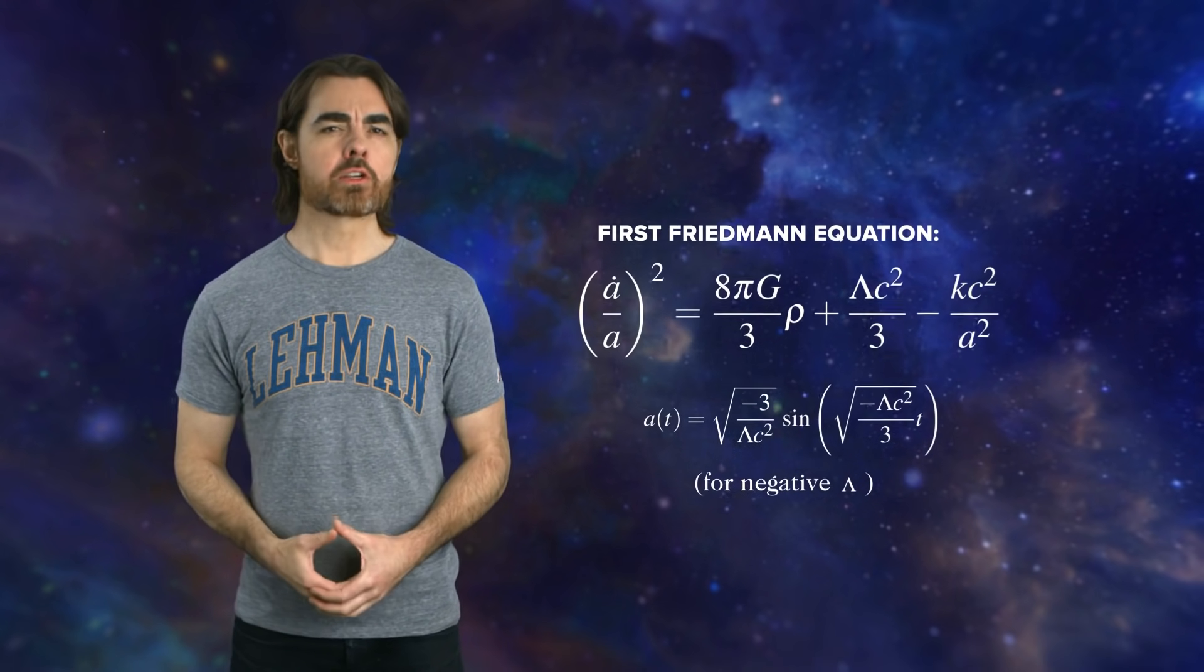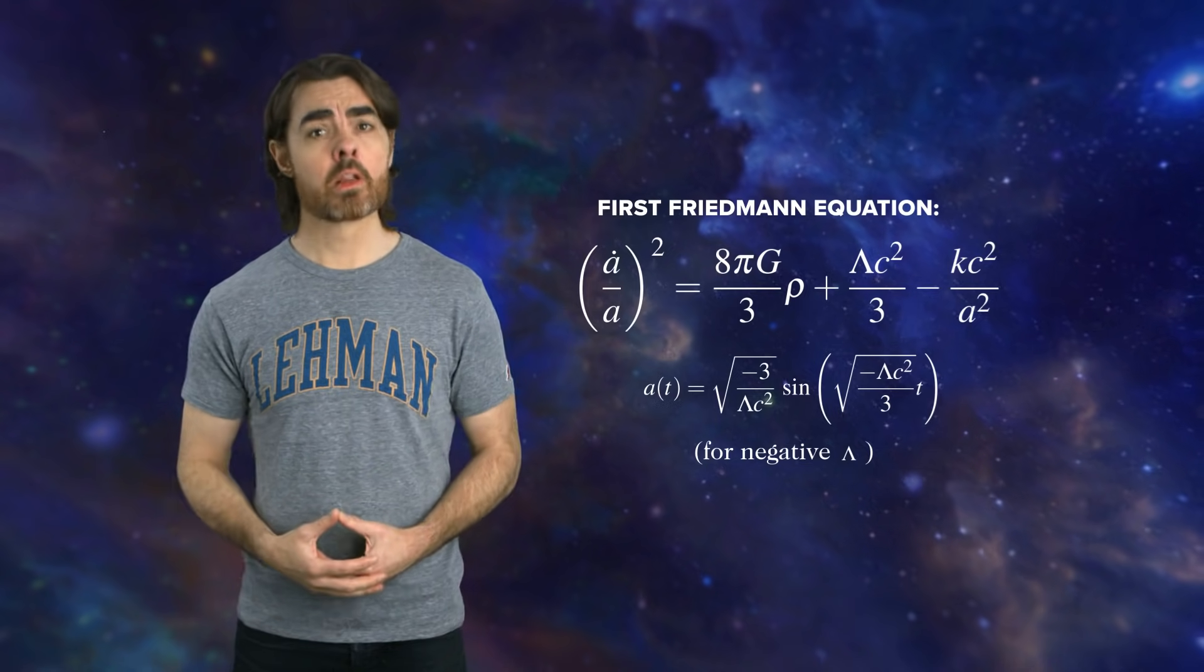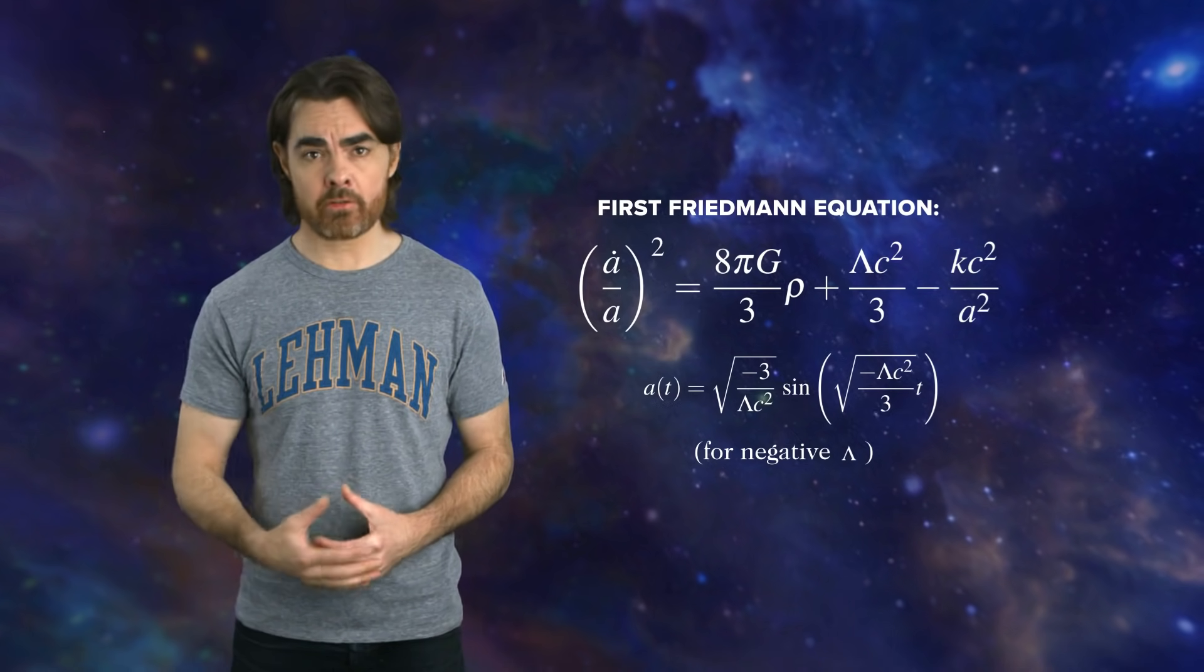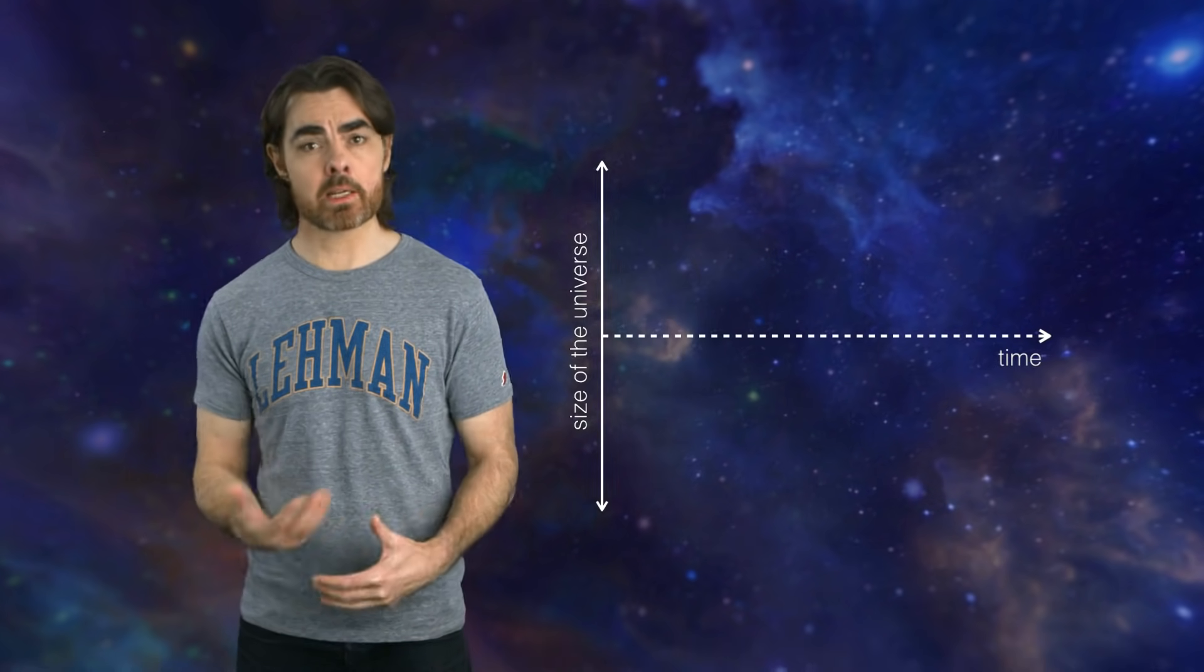Dr. Farnes does a couple of calculations that are consistent with a negative lambda. He uses the first Friedman equation to correctly conclude that a universe with a negative cosmological constant should have a sinusoidal scale factor. He interprets that to mean that the universe should oscillate endlessly in size. But that's a bit mixed up.